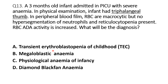Option A is transient erythroblastopenia of childhood (TEC). It can present at the age of 3 months, but congenital malformation of limbs is not present in TEC. RBCs are normocytic in TEC, and although reticulocytopenia is also present, RBC-ADA activity remains normal in TEC. So this option is ruled out.